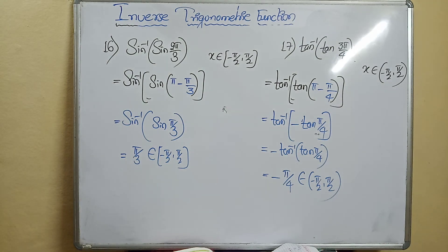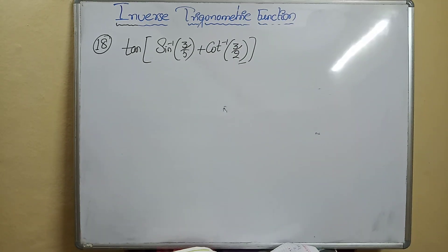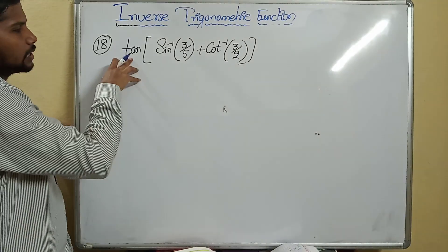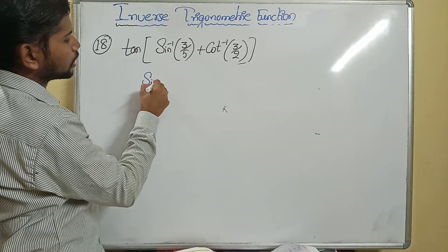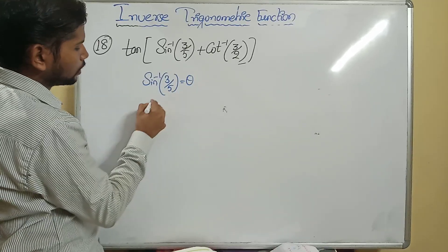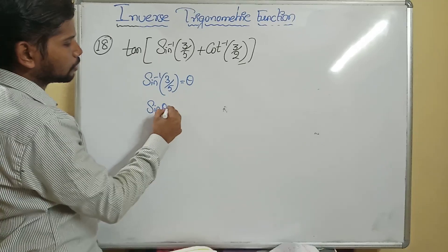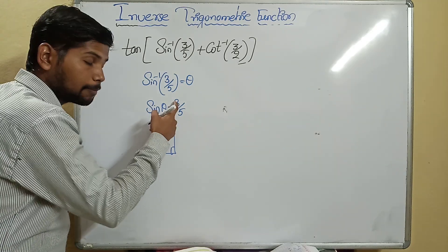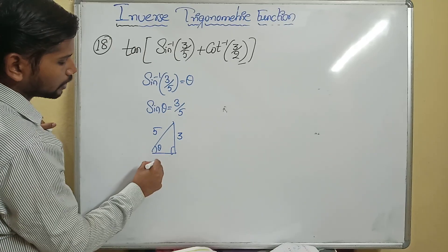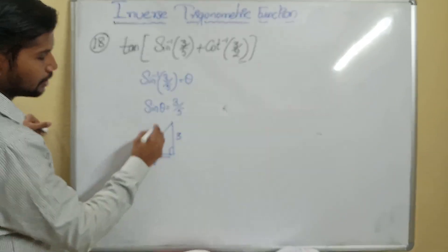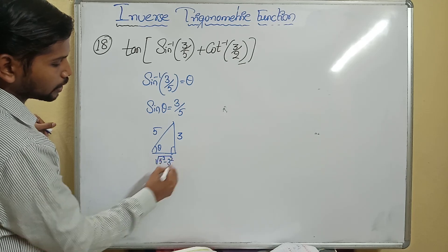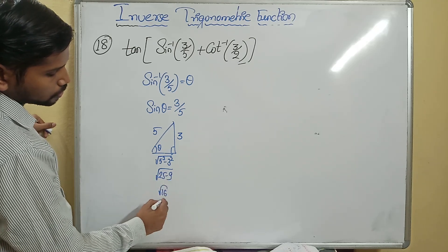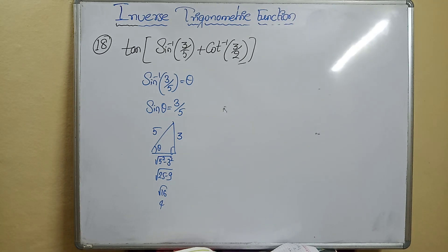Now: tan of (sine inverse of 3/5 plus cot inverse of 3/2). Convert both to tan. Let sine inverse of 3/5 = θ, so sin θ = 3/5. By the triangle method, opposite = 3, hypotenuse = 5, adjacent = √(25−9) = √16 = 4. Therefore tan θ = 3/4, so θ = tan inverse of 3/4.